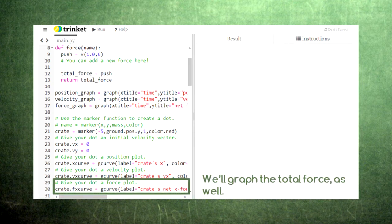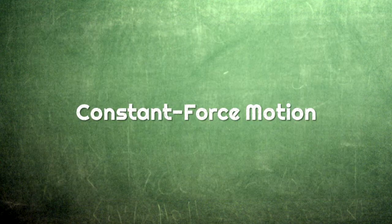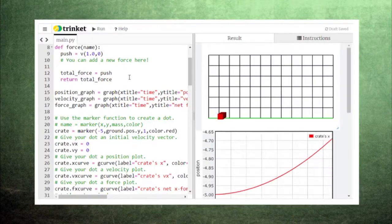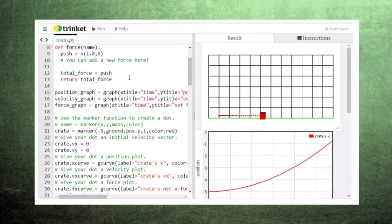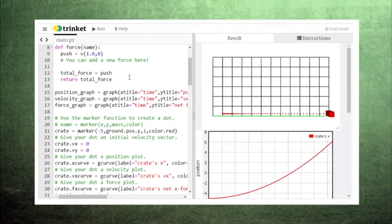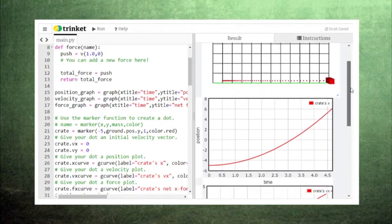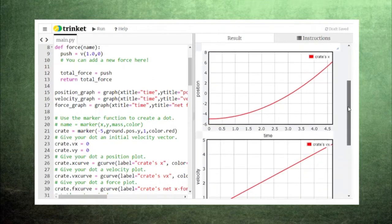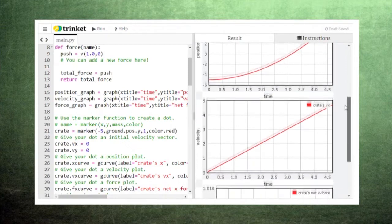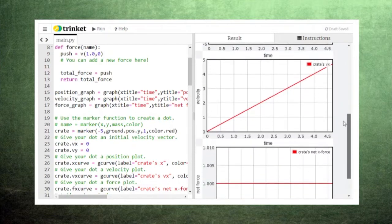Finally, we've also added a graph of the net force on the crate. Let's first try the simple case of applying a constant force to our crate to move it across the floor. A constant force produces a constant acceleration, so our animation looks exactly like what we studied before. The crate's velocity increases at a steady rate, and our position graph becomes steeper in the shape of a parabola.